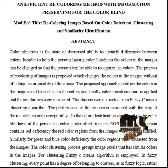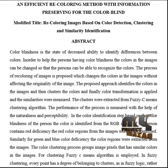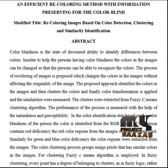Colorblindness is a state of decreased ability to identify differences between colors. In order to help persons having colorblindness, the colors in images can be changed so that persons can recognize the colors. The process of recoloring images is proposed, which changes the colors in images without affecting the originality of the image. The proposed approach identifies the colors in images, then clusters the colors, and finally color transformation is applied and similarities are measured.